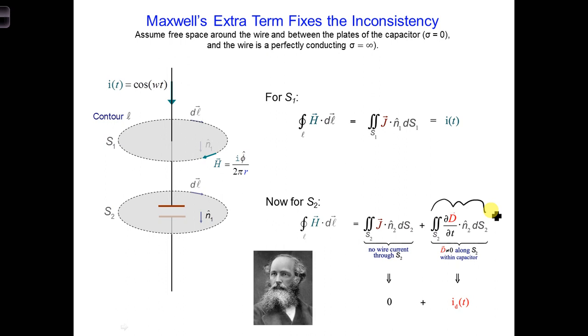So now, instead of just integrating the J current density, which we'll call conduction current, through the surface in order to obtain the magnetic field around it, to get an accurate value for the magnetic field, we also have to integrate the displacement current flowing through that surface.